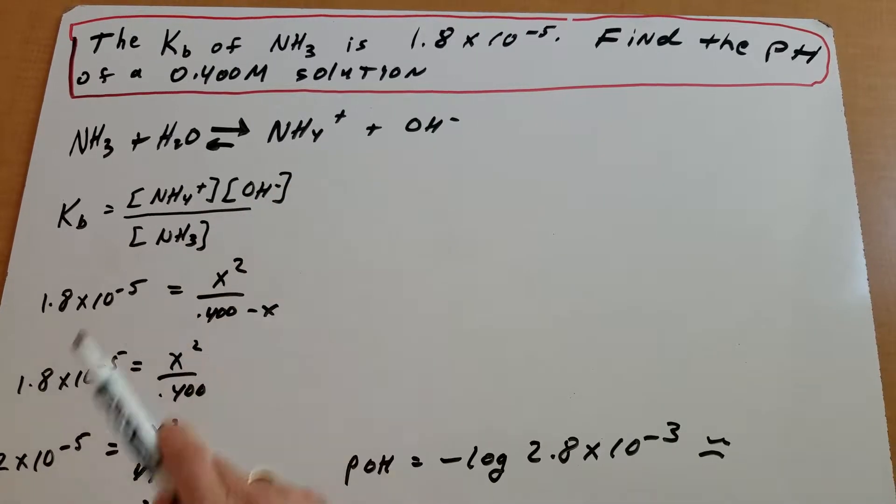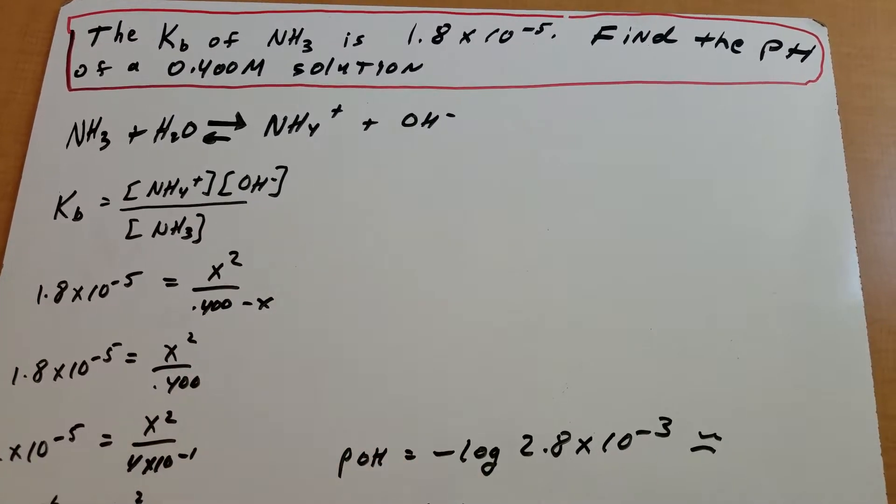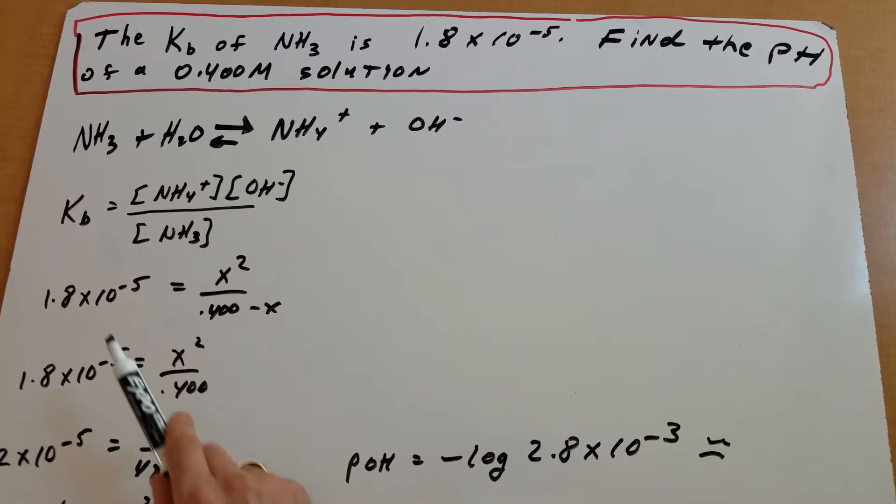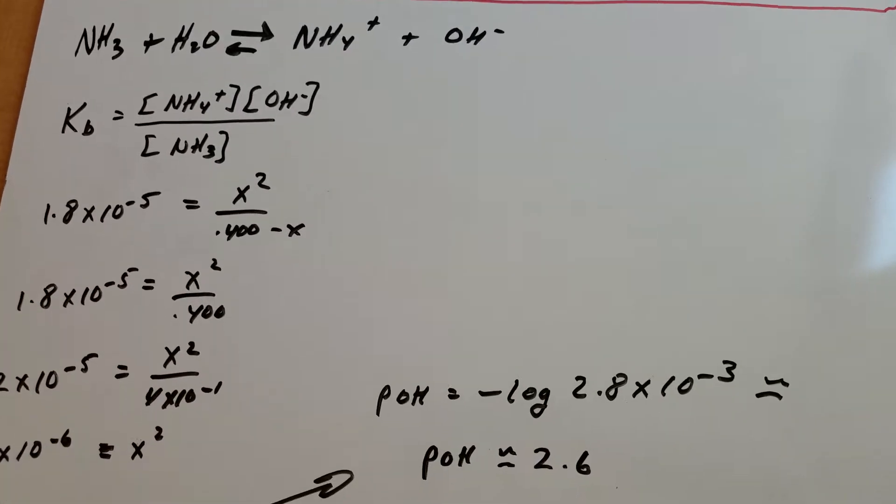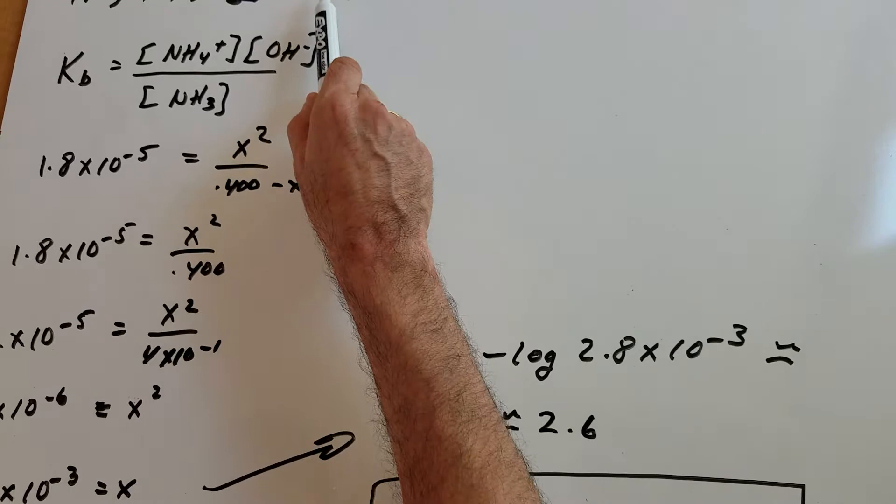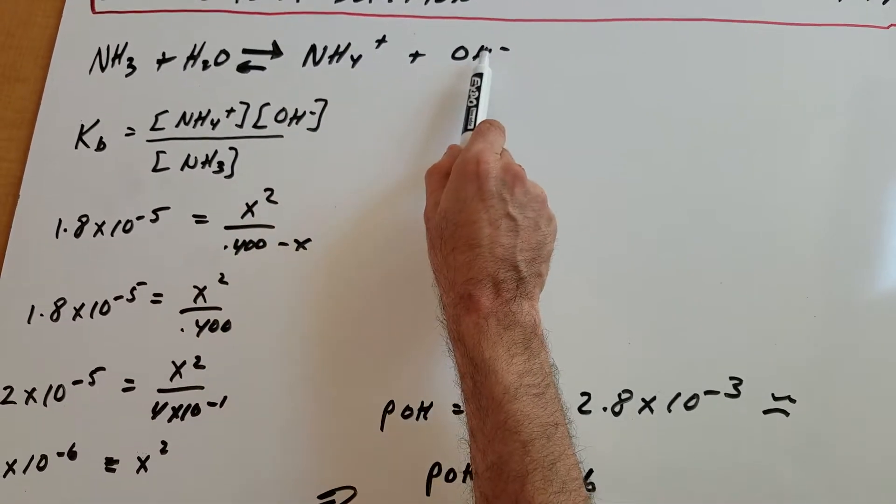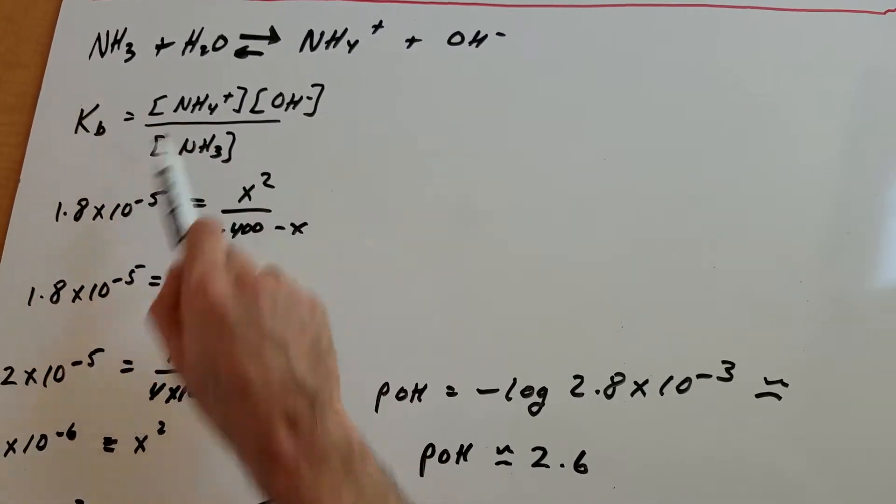The next move is we write the Kb, which as you know is the products over the reactants and don't use water. So the products is NH4+ times OH- divided by ammonia.